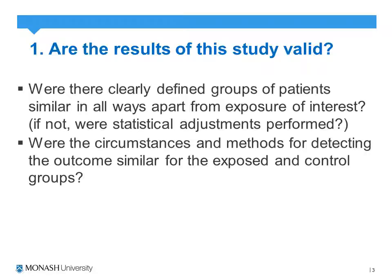The second question asks were the circumstances and methods of detecting the outcome similar for the exposed and control groups? This relates to detection bias. So the methods in which we identified the outcomes — were they blinded? Were the investigators blinded? How were they identified — were they patient reported or clinician reported? Quite often if they were patient reported, we will have to identify was there any response bias associated with that, identifying a trend for patients to manipulate the results in some way according to their exposure status.